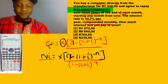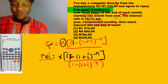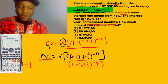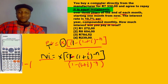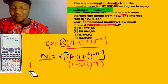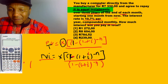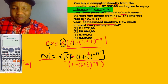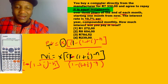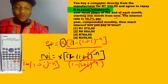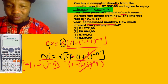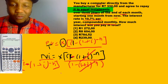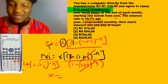So dividing throughout, we get: one minus one plus i to the negative n on the bottom. On this side, the bracket and bracket cancel, so we can now get X. Therefore: X equals PV times i, divided by one minus one plus i to the negative n.